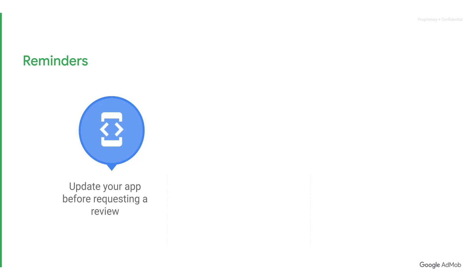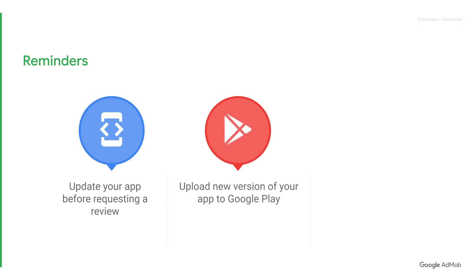Here are a few quick tips to make sure that the review process goes smoothly. Please don't forget to update your app before requesting review in order for the violation to be removed. The exception to this is if you believe your policy violation notification is an error — in that case, you can request a review without updating your app. For Google Play violations, please make sure to upload the new version of your app to Google Play.